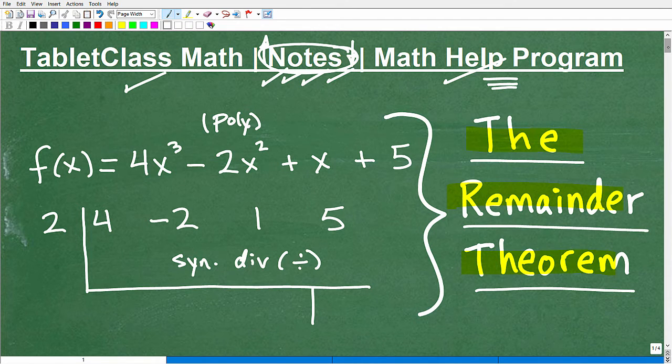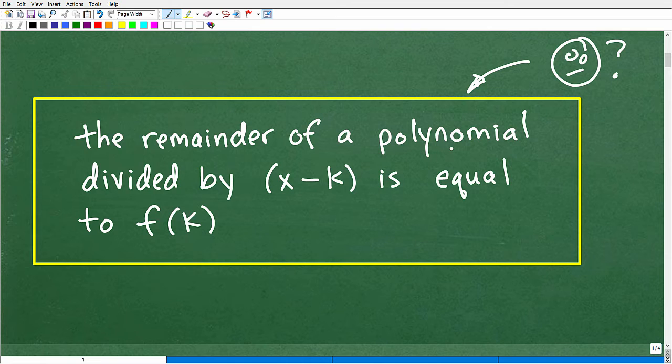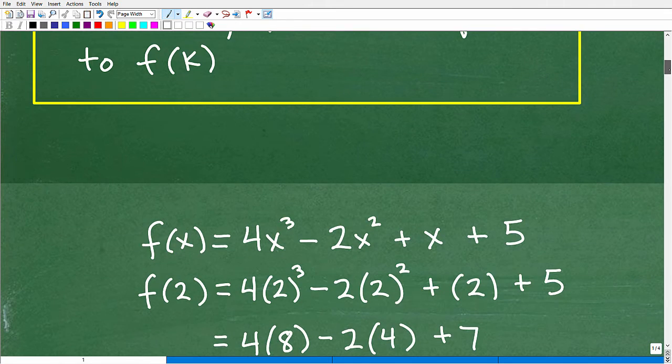Okay, let's get into the remainder theorem. So when you're studying the remainder theorem, or a lot of things in advanced mathematics, you're generally given something like this as a definition. And it says the remainder of a polynomial divided by x minus k is equal to f of k. And you might be like, what does that mean?